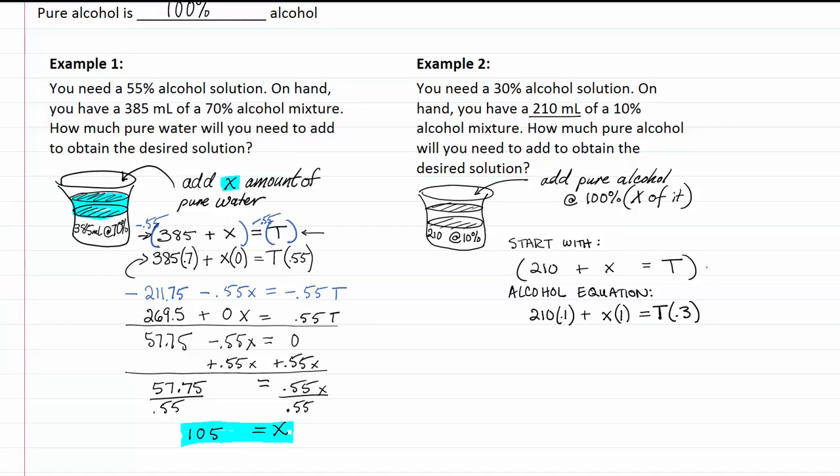Now I need to multiply my top one by something that will get rid of the variable that I don't want to keep throughout the rest of the process. I'm going to use negative 0.3 for both of these. When I do that, this is the equation I get. Distributing this through negative 63 minus 0.3x equals negative 0.3t. 10% of 210 is 21 and 0.3 times t is just 0.3t so here's what we're going to look at right here.